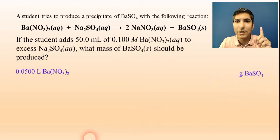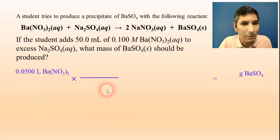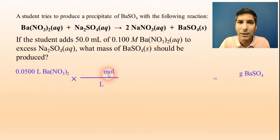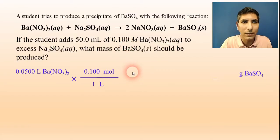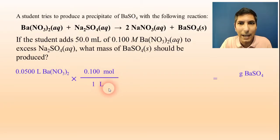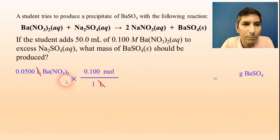The first step is convert to moles. In my first step, I have to put liters on the bottom, and since I'm converting to moles, moles on top. Instead of using the periodic table and the molar mass this time, I'm going to use the molarity. So, I look at the molarity of that barium nitrate, and it's 0.100. That means it's 0.100 moles per one liter. I can actually use that as a conversion factor. So, I'm going to cancel liters, and I'm now in moles of barium nitrate.